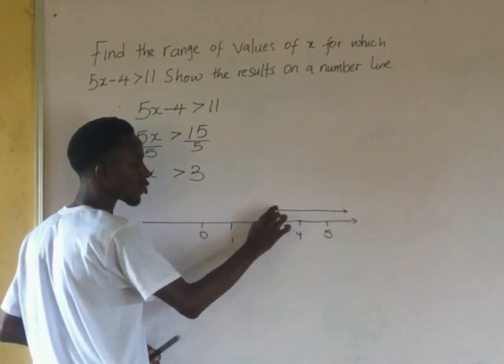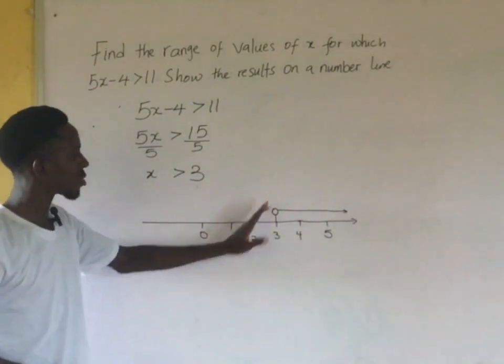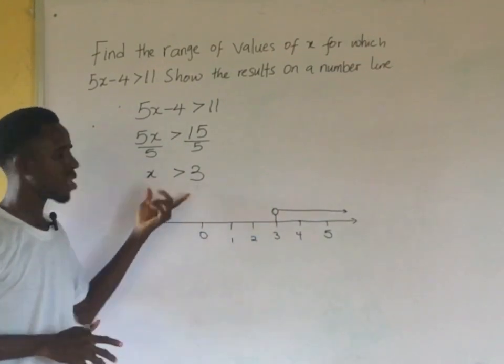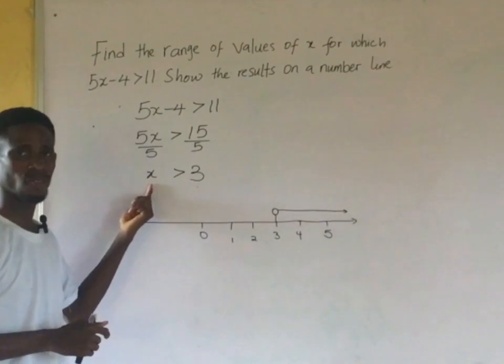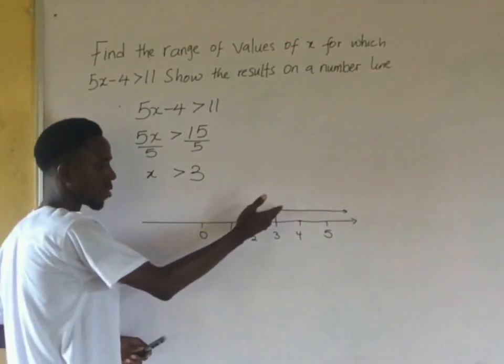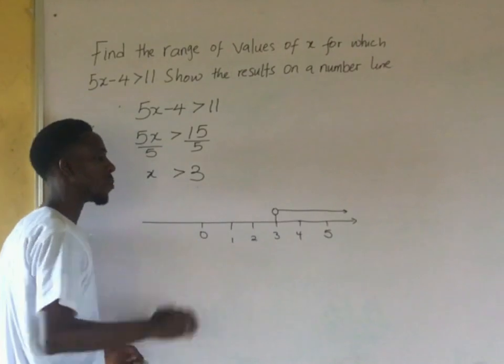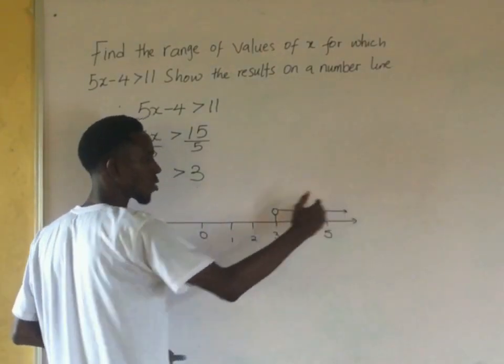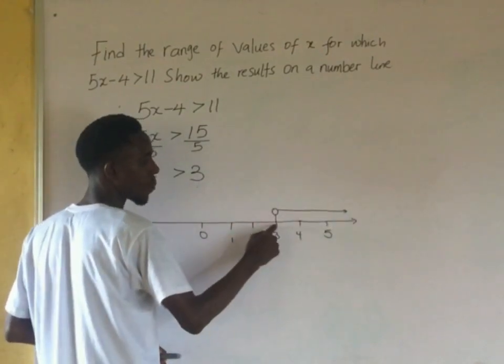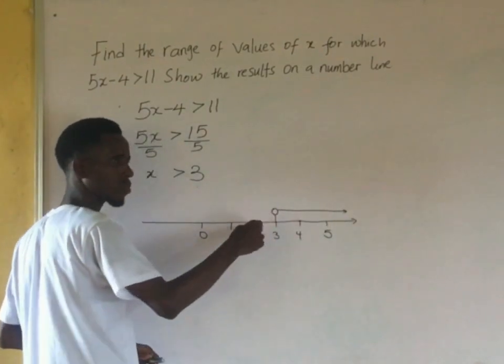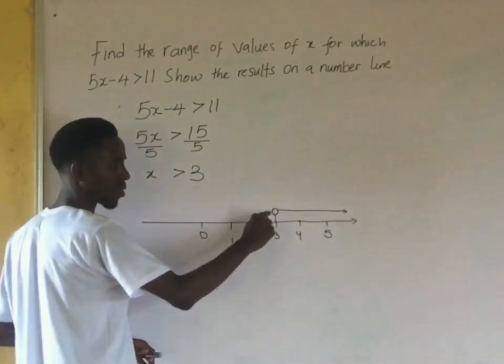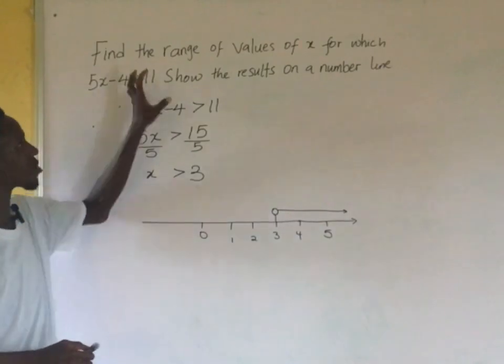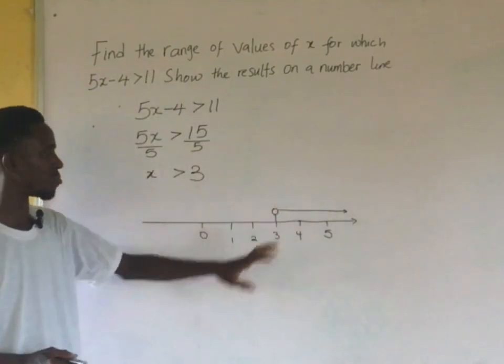The reason why I didn't shade the inside of this circle is because I'm not taking 3 as inclusive in the values of x. If 3 is included, then I'm going to shade the circle I have. But because it's not included, I'm not going to shade it. I'm just taking all the values from this point. So 3.1 is greater than 3, that's why I'm beginning from here. All these values are the values that can be taken. That's what range of values means.